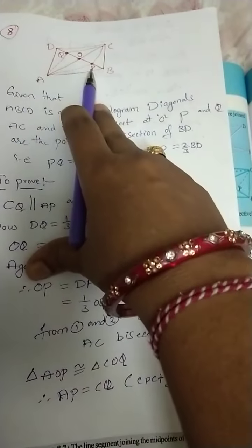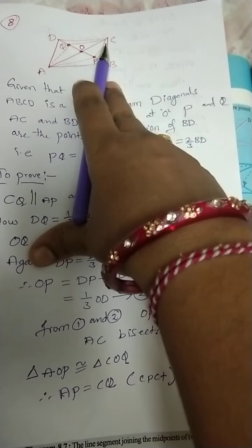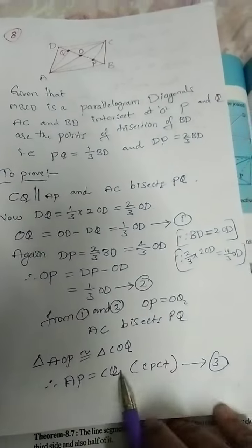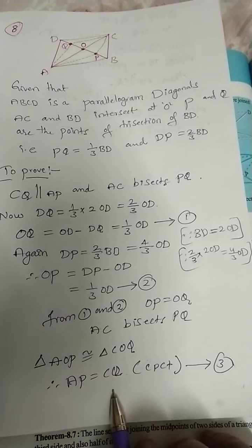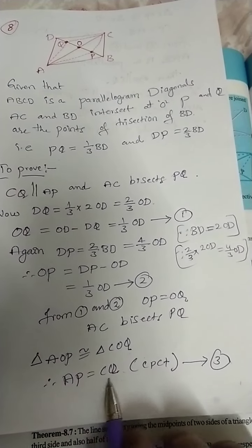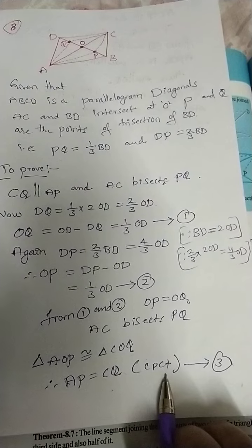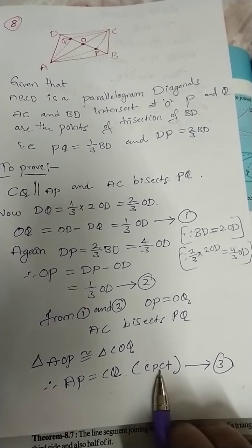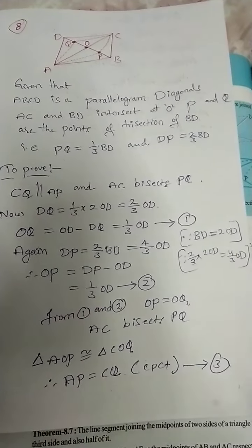Triangle AOP is congruent to triangle COQ. CP is equal to AQ by CPCT rule, corresponding parts of congruent triangles.